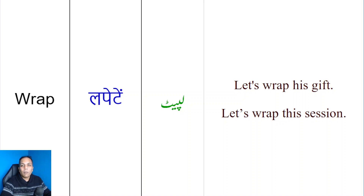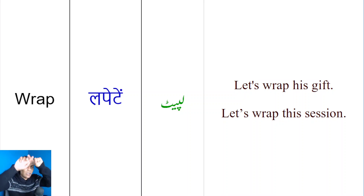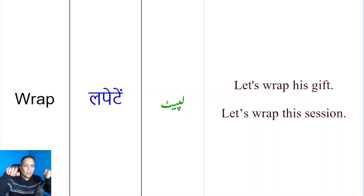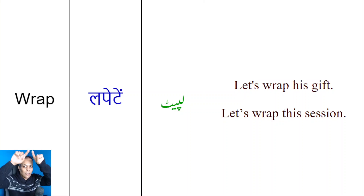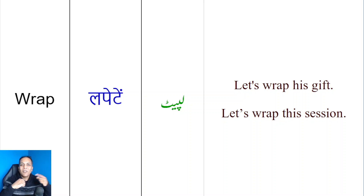Iske alawa, doostho, aap ne dekha hoga ki jaise Microsoft Word hai ya different word processing programs hain. Toh usmein hum picture ke irgird agar hum ne text likhna ho, toh usko bhi 'wrap' karna kehte hain. Yani ki, ek picture banai aur uske irgird jo word likha, ek layer si bana di words ki iske irgird — toh usko bhi 'wrap' kaheinge.